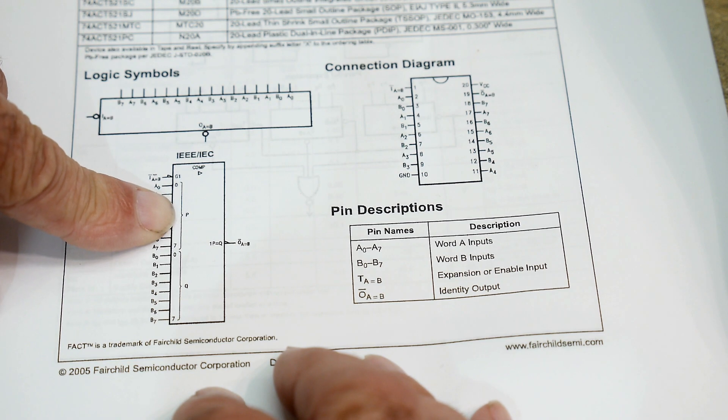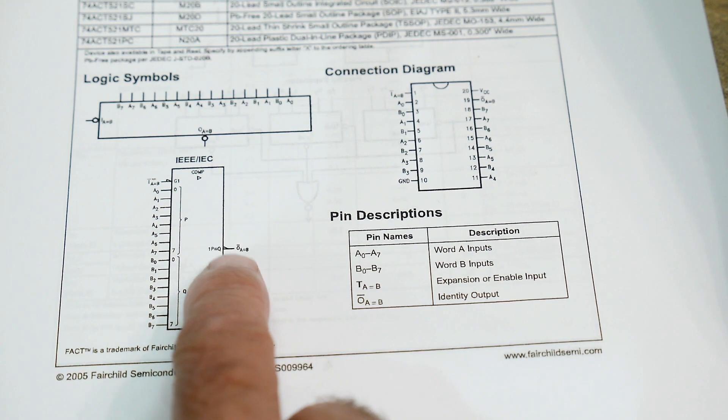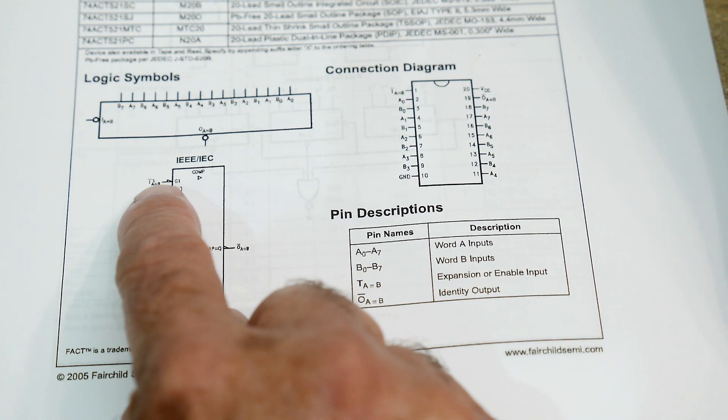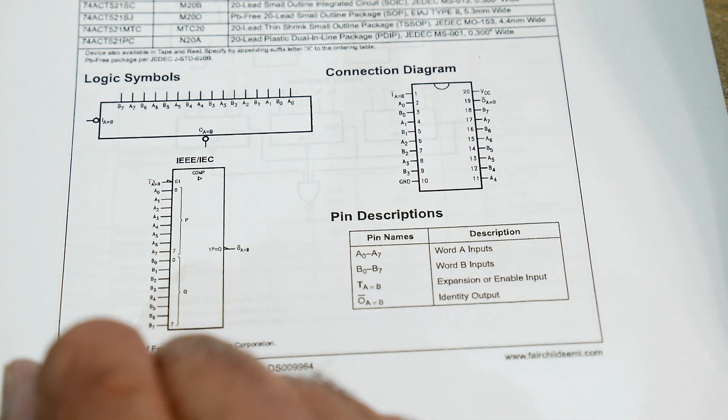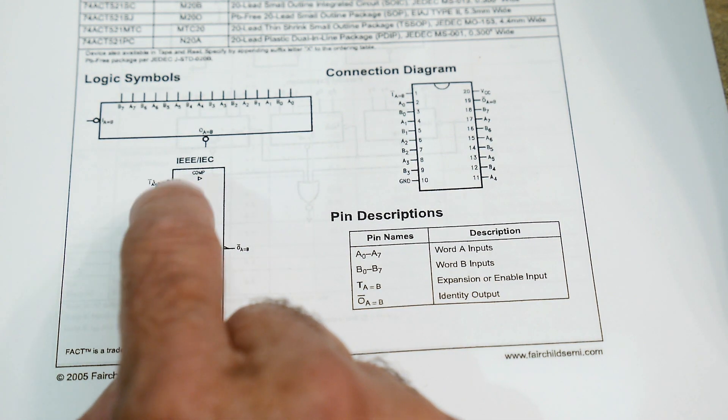Out here it will give you a low-true signal if they are equal. And then there's an enable pin too, so it's a low-true enable to turn the part on and off. I don't think it tri-states, I think it just disables it.